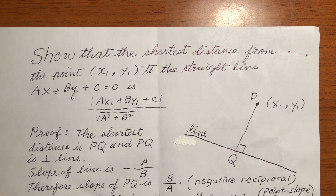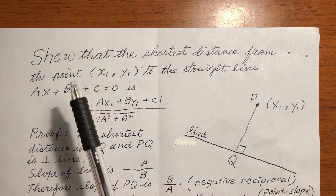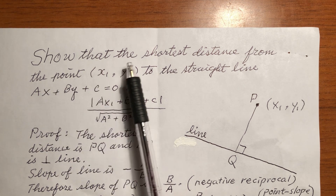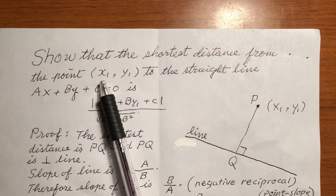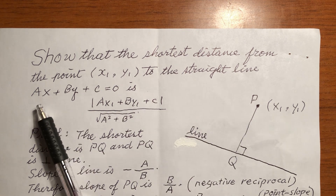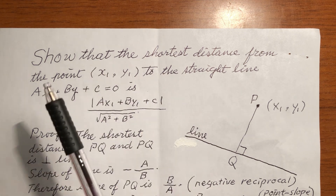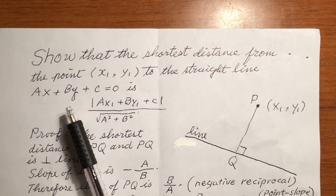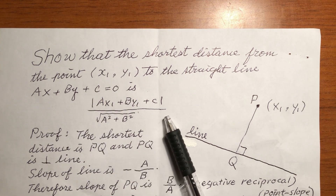Hello everybody. This is a question in geometry. Show that the shortest distance from the point x1, y1 to the straight line — this is the equation of the straight line — we want to show that the shortest distance from this point to this line. This is the result.